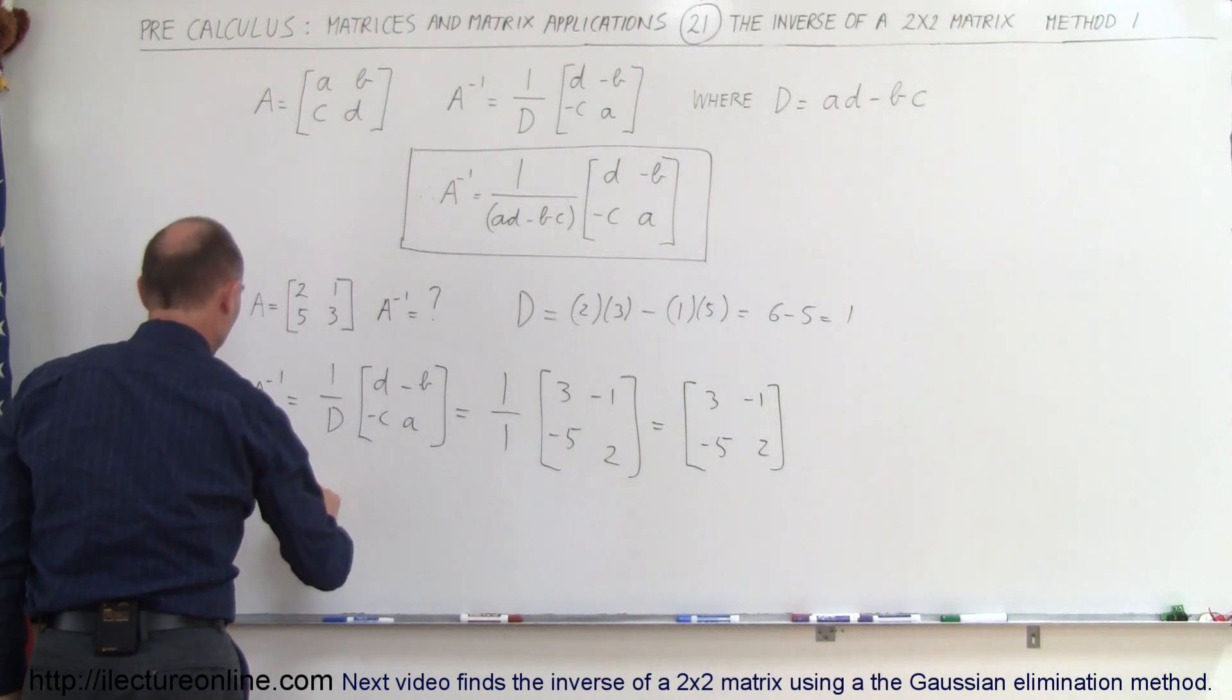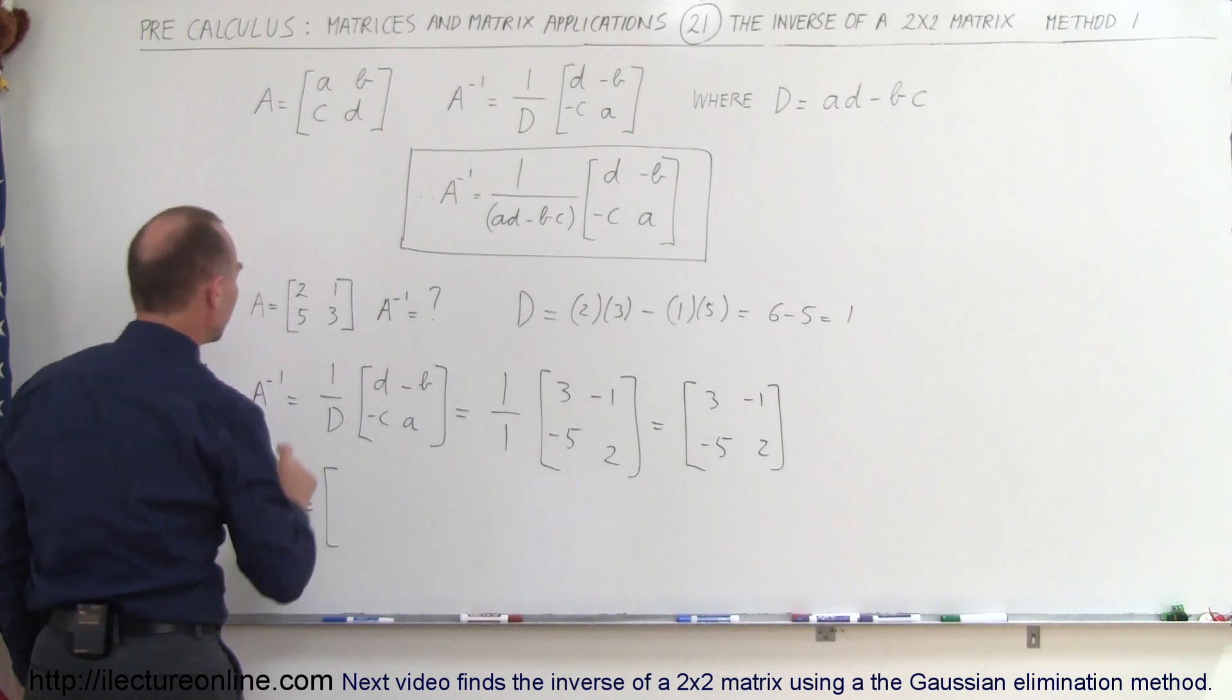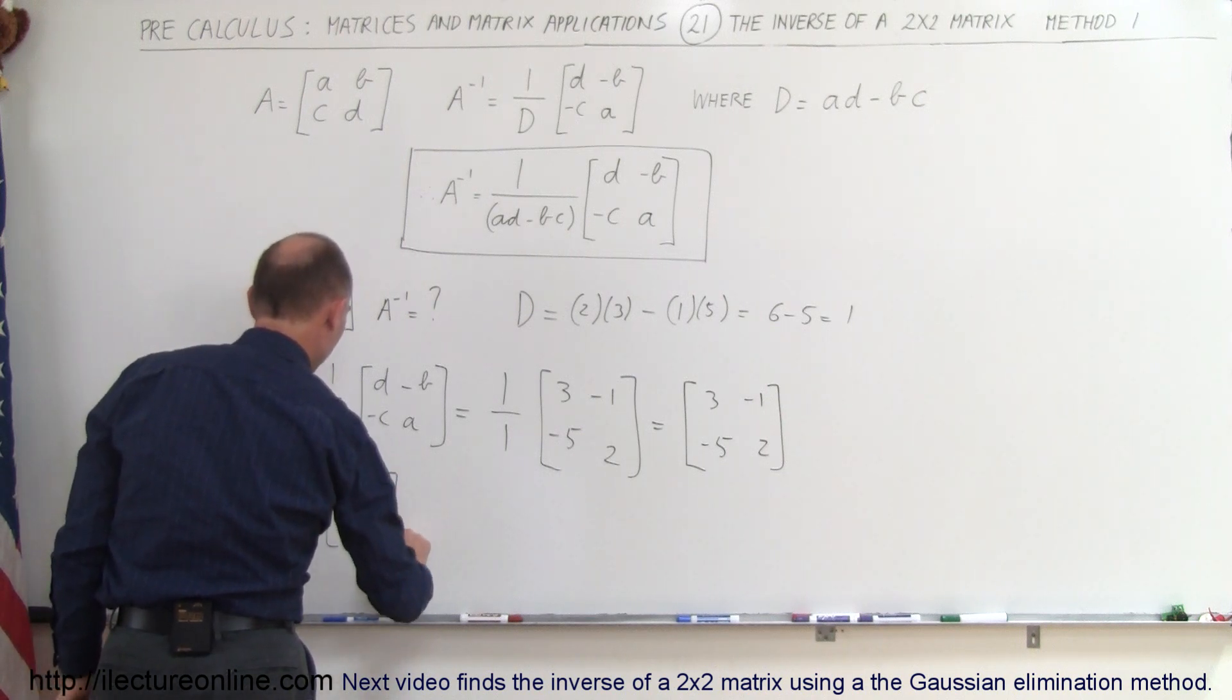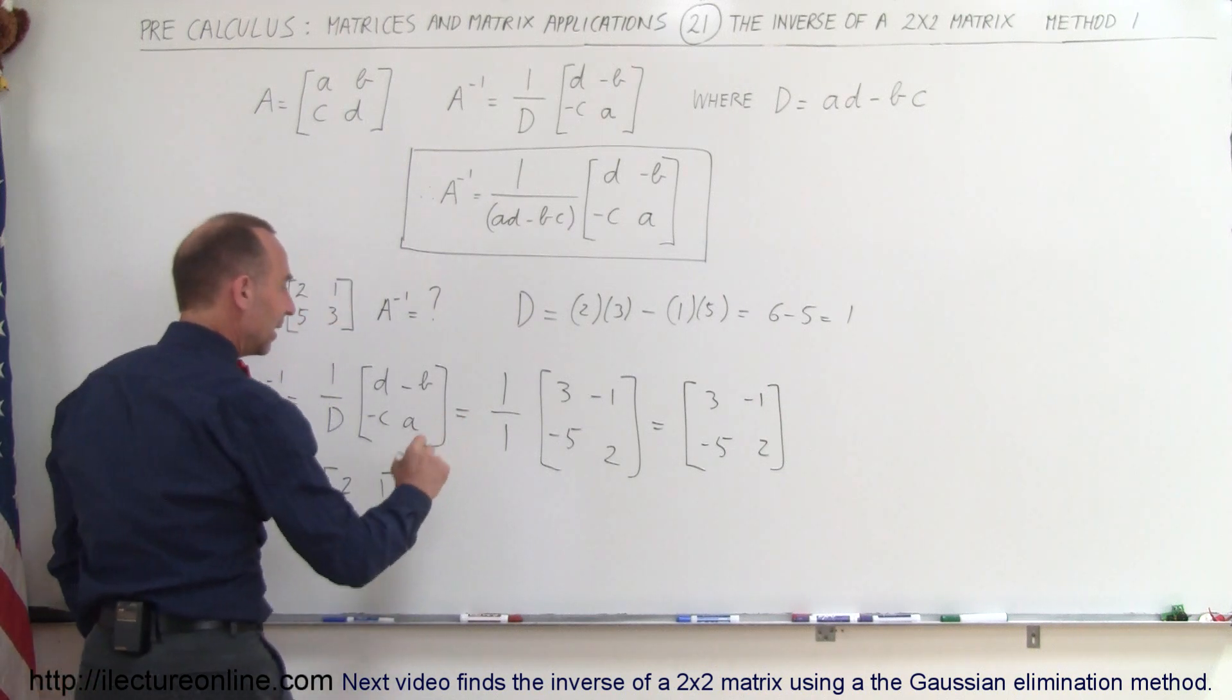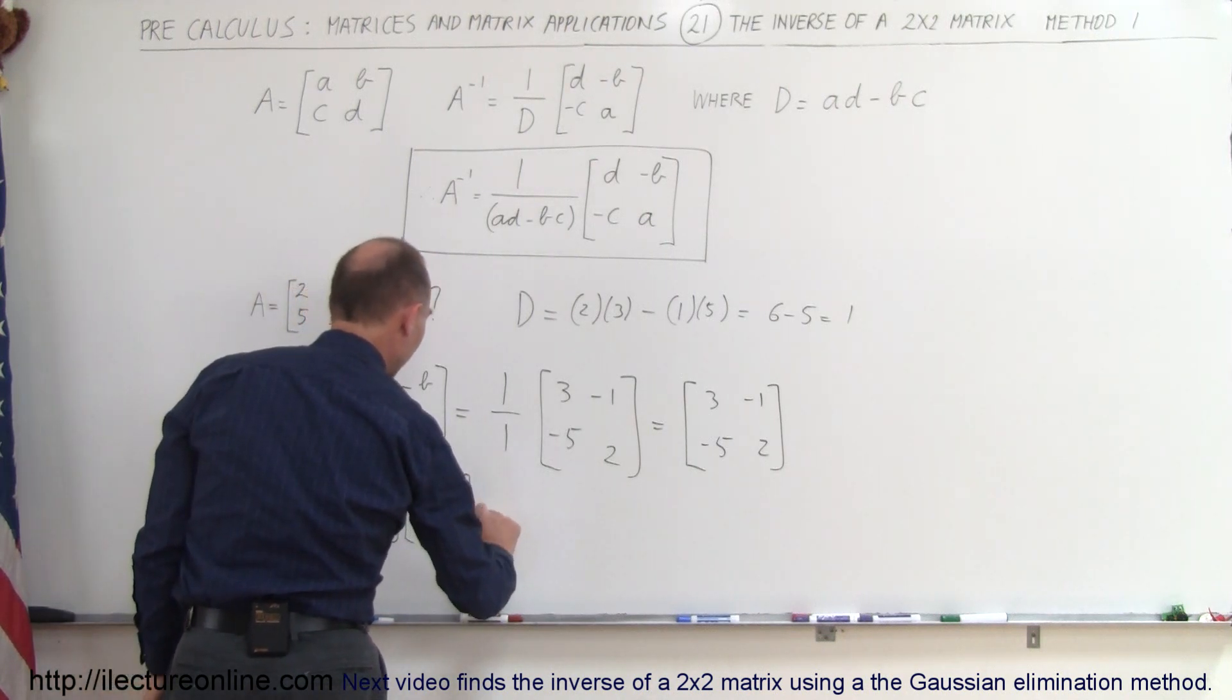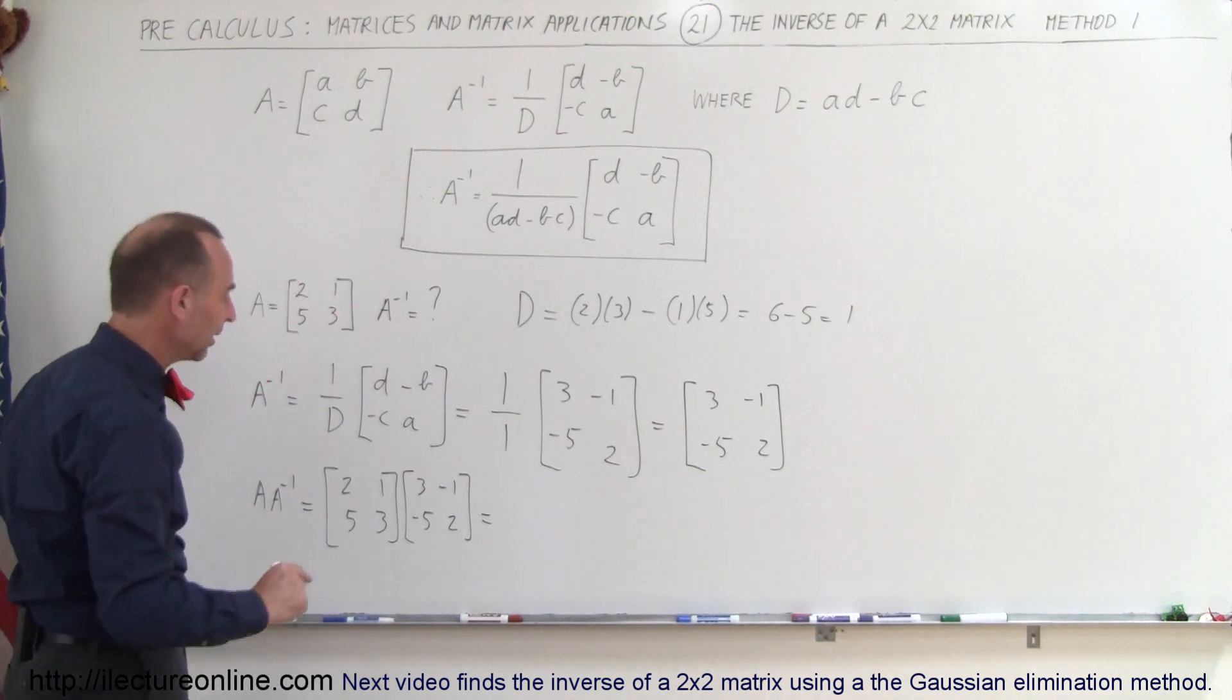So A times A inverse should equal the identity matrix, so 2, 1, 5, and 3 times 3, negative 1, negative 5, and 2 are the elements of the inverse of the matrix, so let's multiply it out.